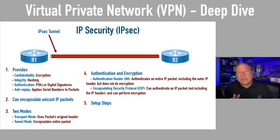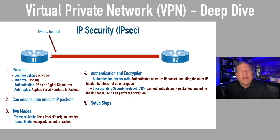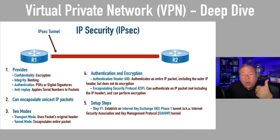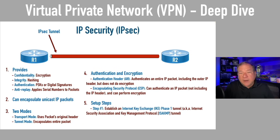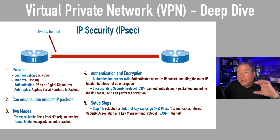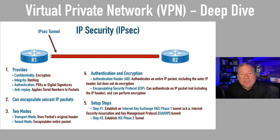Let me help you visualize how this gets set up — it's a two-part process. For your notes: when we set up an IPsec tunnel, we go through two phases. IKE Phase 1 sets up a tunnel called an ISAKMP tunnel — Internet Security Association and Key Management Protocol. You can use ISAKMP and IKE Phase 1 interchangeably. IKE stands for Internet Key Exchange. Within the protection of this first tunnel, we'll set up a second tunnel — the actual IPsec tunnel, which is IKE Phase 2.